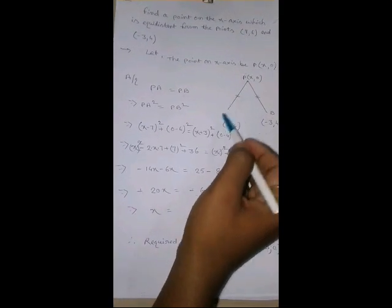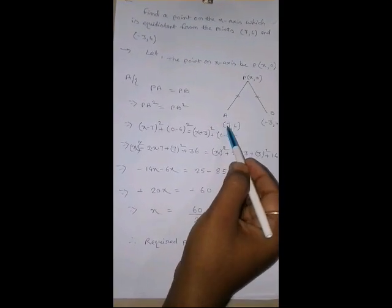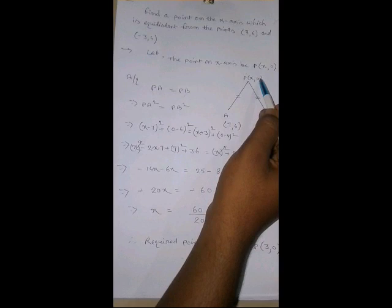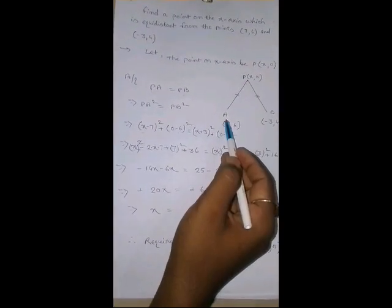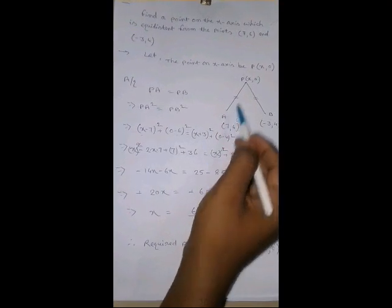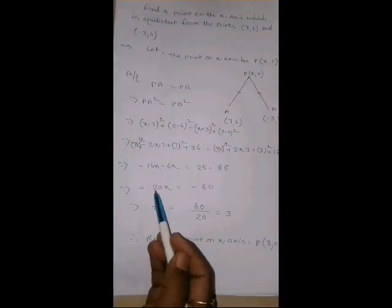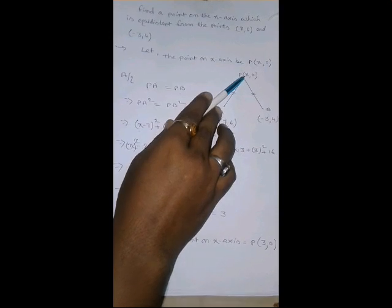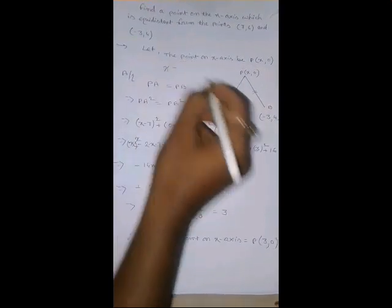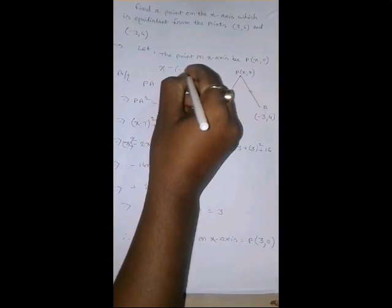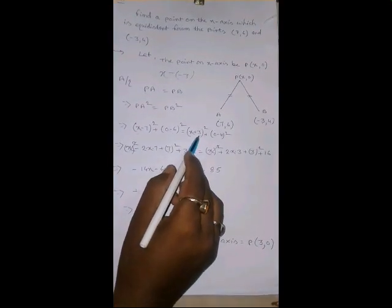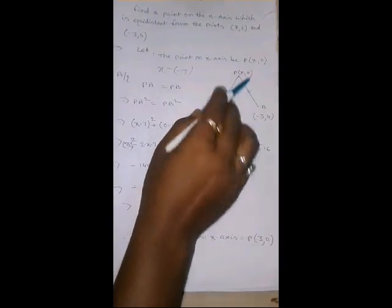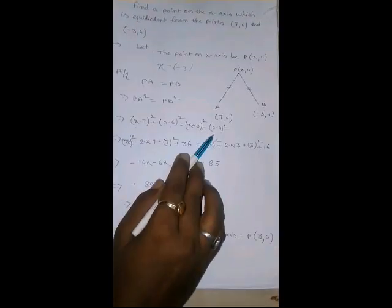So, PA, what will be the distance formula? x minus 7 whole square plus 0 minus 6 whole square. From here to here also, we can write. Or, if you wish, you can write 7 minus x whole square. Both are correct. Then, similarly, here you use x minus. And, here again minus is there. So, this minus, this minus will become plus. So, directly I have written x plus 3 whole square. And, this will become 0 minus 4 whole square.